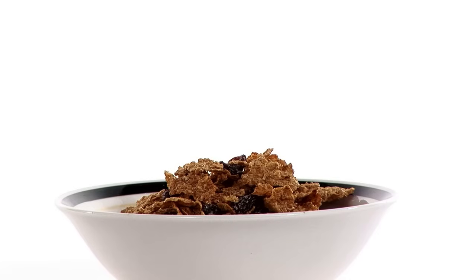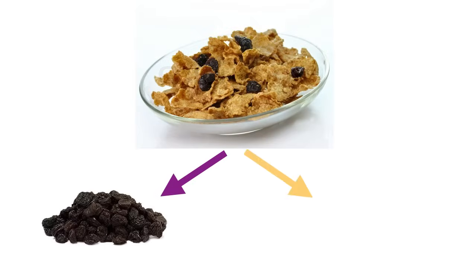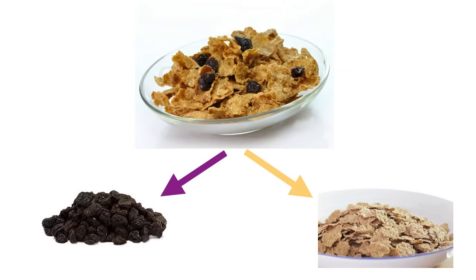Now let's look at another bowl of cereal. Imagine pouring yourself a bowl of Raisin Bran. What is being mixed together? Raisin Bran is made by mixing together both raisins and cereal. So what is Raisin Bran? Raisin Bran is a mixture, but not a solution. It's a mixture because it's made of two different substances, but it's not a solution because it's not evenly mixed together. If you were to eat a spoonful, sometimes you get more raisins, sometimes you get more cereal. Because it's not evenly mixed, we cannot call it a solution.